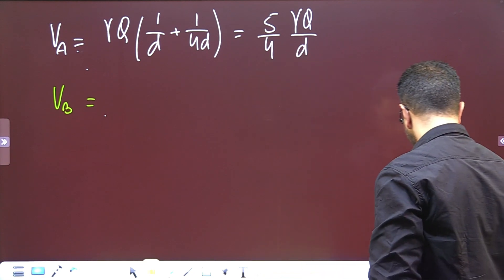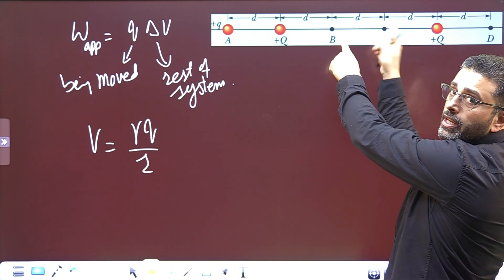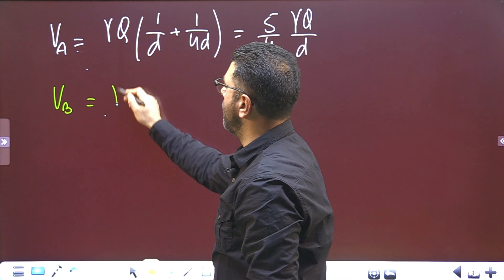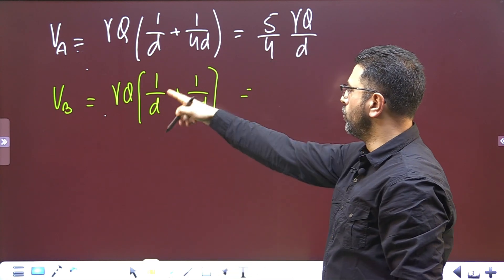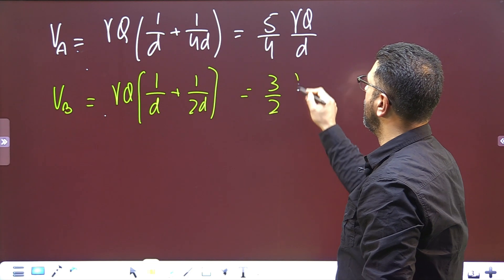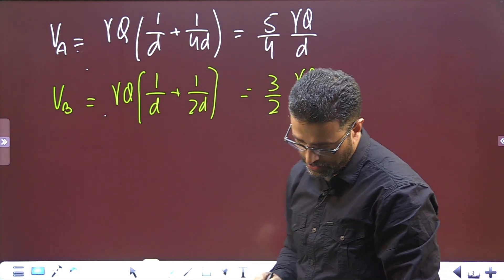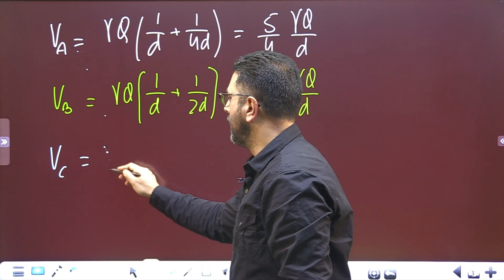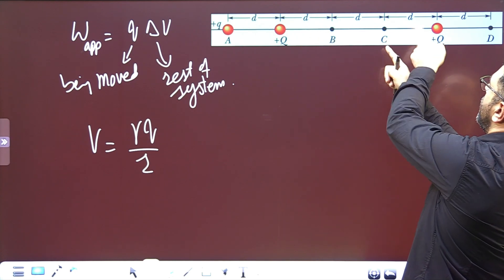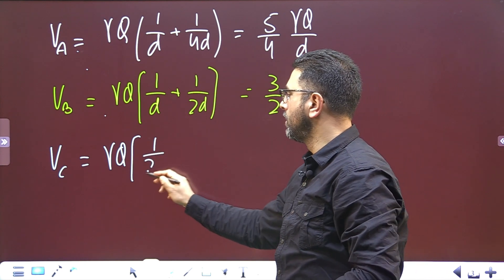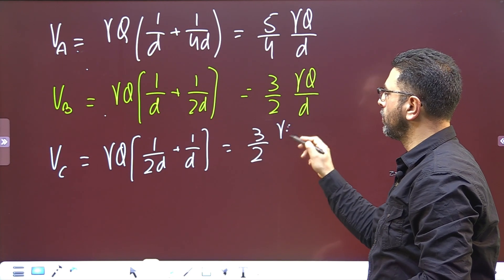For point B: one charge is at distance D and the other is at distance 2D. So potential at B = γQ·(1/D + 1/2D) = γQ·(3/2D), giving V_B = 3/2 · γQ/D. Potential at point C: similarly, one charge is at distance 2D and the other at D, so it is the same — V_C = 3/2 · γQ/D.